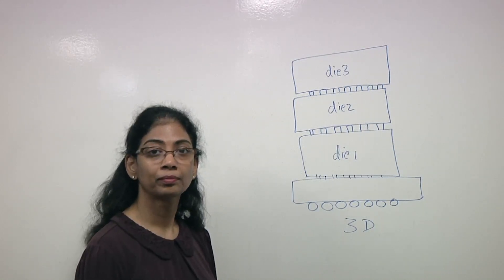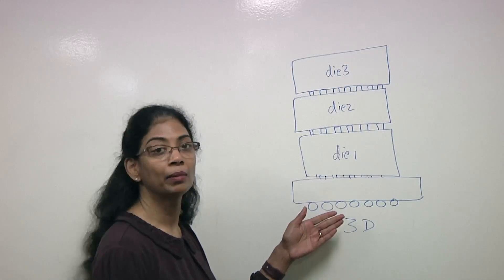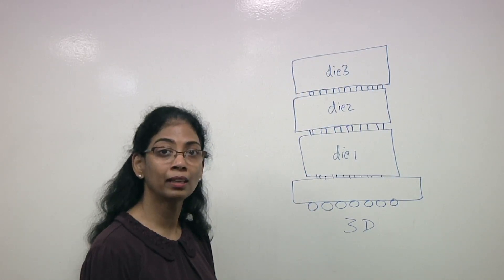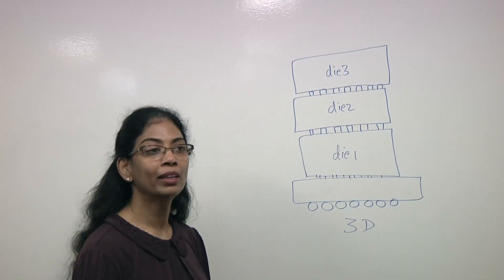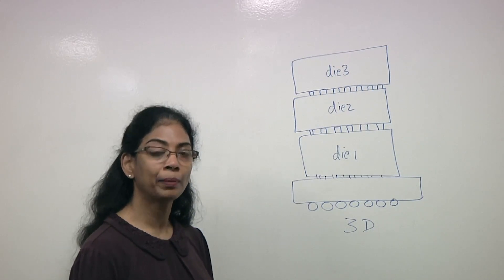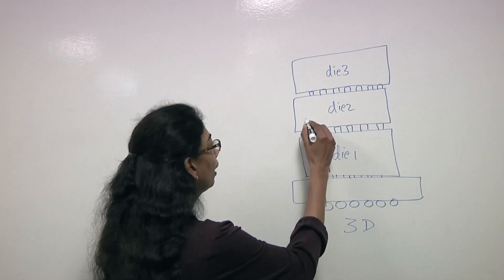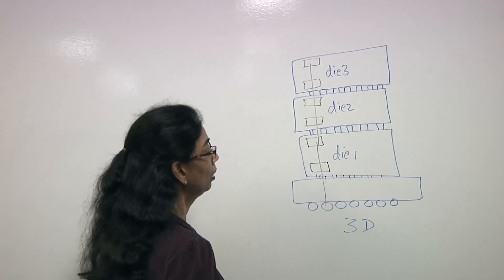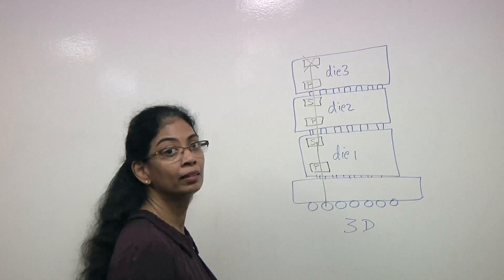So assuming that you've got a known good die and you put it in the middle there on die 2, how do you get to that? That's the challenge we have today - you need a mechanism, a standard that describes how the dies in the stack can be accessed. That's where IEEE 1838 comes into play. IEEE 1838 is a standard for three-dimensional stacked integrated circuits and it describes a serial access through a primary tap and a secondary tap. Each of these dies have a P-tap and an S-tap that can be serially accessed from the package.